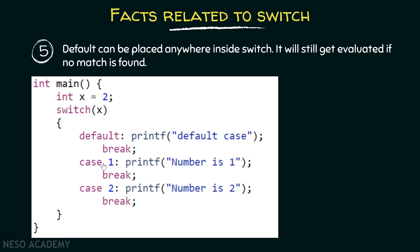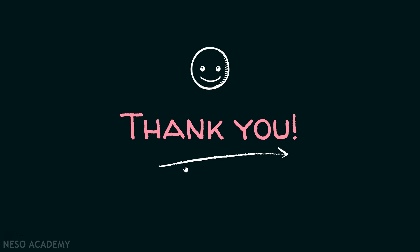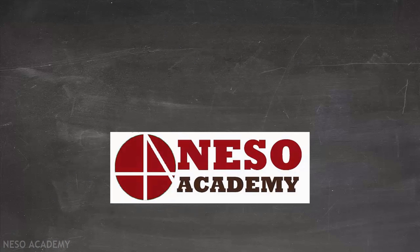Fact number five: default can be placed anywhere inside switch — it will still get evaluated if no match is found. It is not always necessary to put default at the end; it can be at the top or in the middle. But it will always be evaluated after checking all the cases. Here, since x is equal to 2, first 2 is compared with case 1 — no match, so that printf is skipped. Then 2 is compared with case 2 — it matches, so that printf gets evaluated and the output is 'number is 2.' Even though default is placed at the top, it only gets evaluated after all cases have been checked.